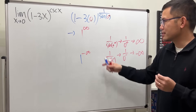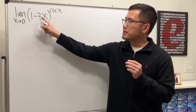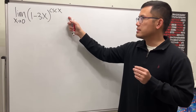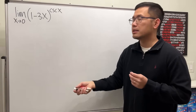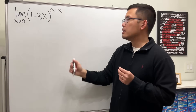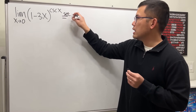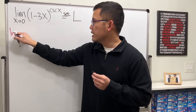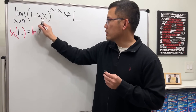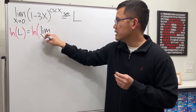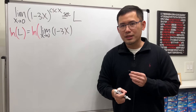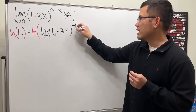Either way we have to do more work. Notice that both the base and the power are functions of x. In this case it's a good idea to call this limit capital L, then take the natural log on both sides — that way we get to bring the power to the front. So: ln(L) equals the limit as x approaching 0 of ln of (1 minus 3x)^(1/sin x), since cosecant x equals 1 over sine x.